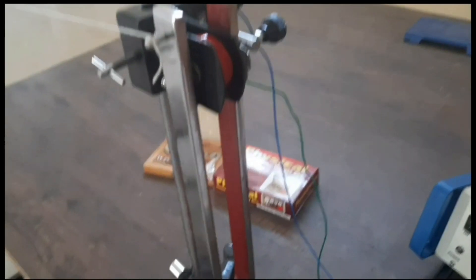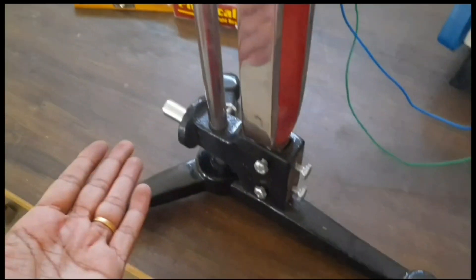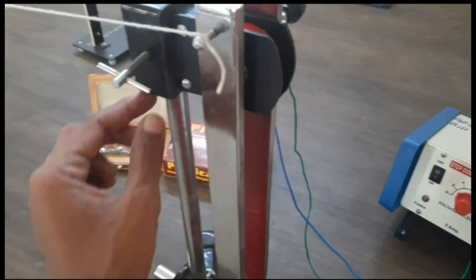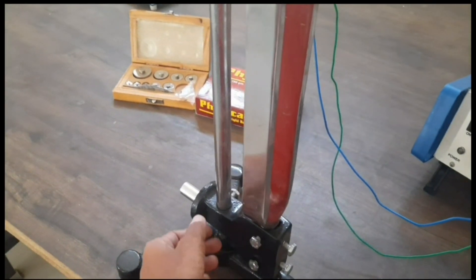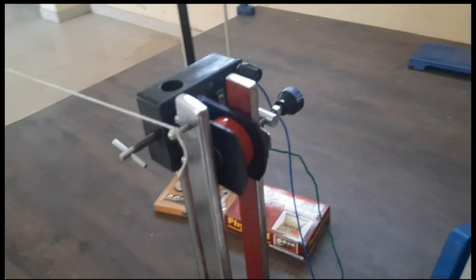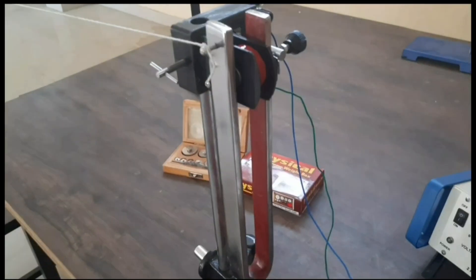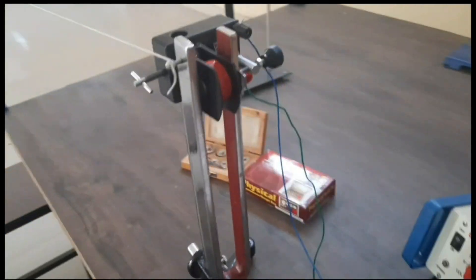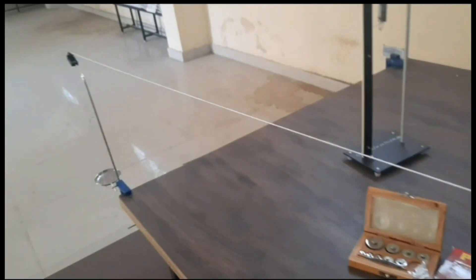If you keep this tuning fork horizontal, you can change the position by using this knob and you can keep it in horizontal mode. Then you can verify for transverse mode. This is the arrangement for longitudinal mode.